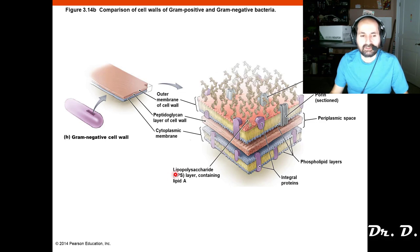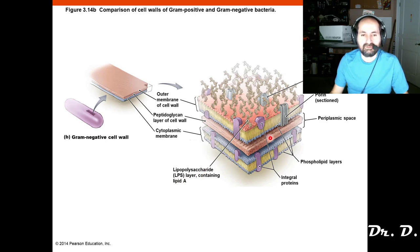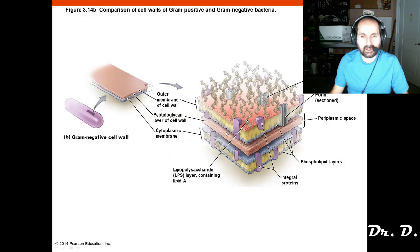The gram negative cell wall has a plasma membrane, a thin layer of peptidoglycan, and then an outer membrane. Part of the outer membrane — the lipopolysaccharide (LPS) — is important because it contains a lipid component called lipid A. Lipid A, if it gets into your system, can cause sepsis and shock — it's a potent toxin. Lipid A is also known as endotoxin.